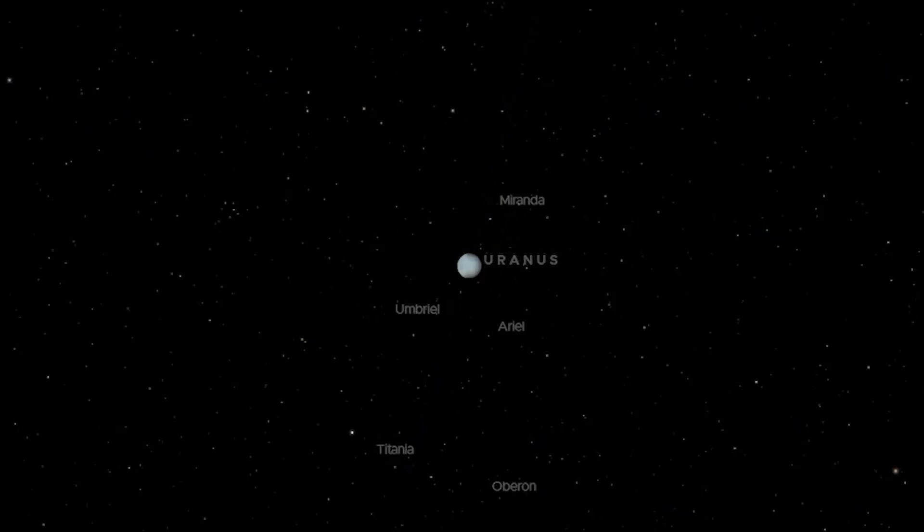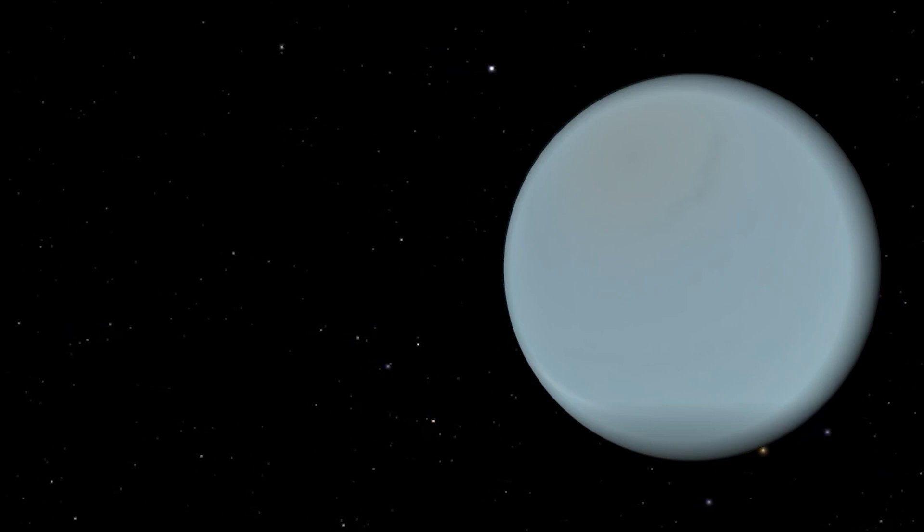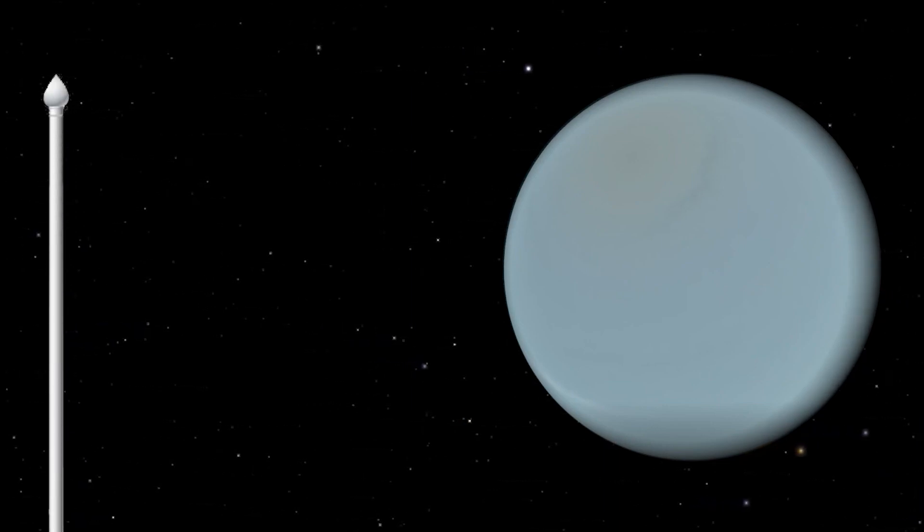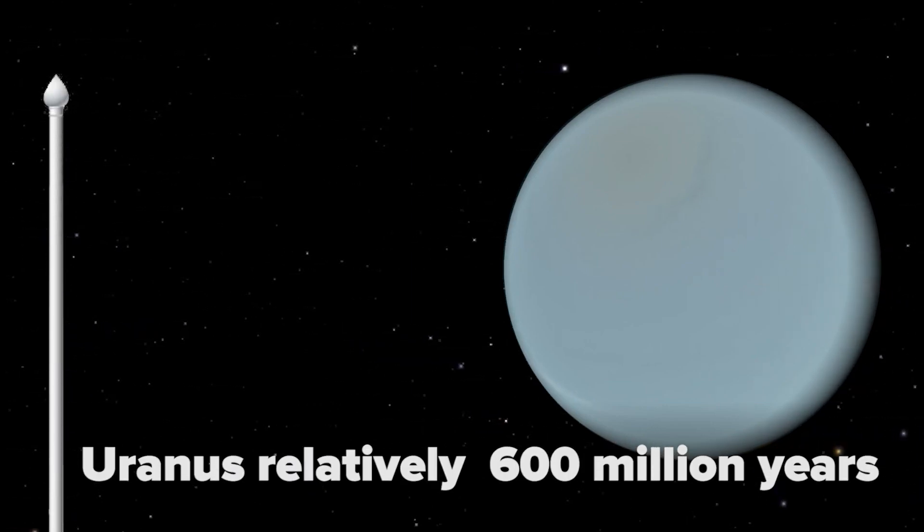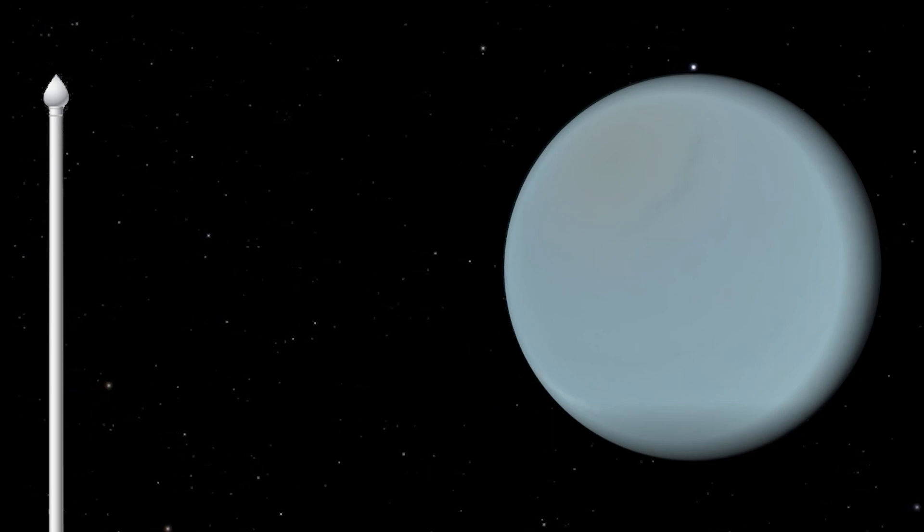Do you know which planet is seventh from the Sun and has 13 known rings? Of course, it's Uranus. Did you know that the rings of Uranus are relatively young, estimated to be only 600 million years old? That might have come as a shock to some people. Let's represent it on the flag.